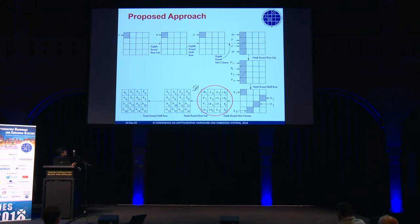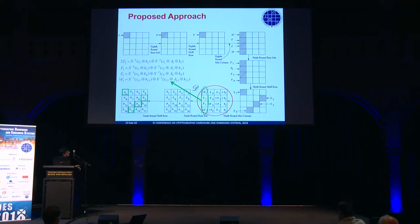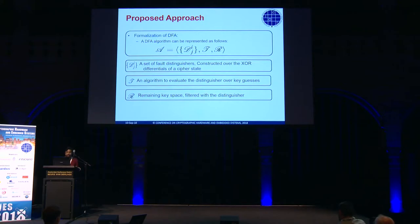This column is linearly correlated, and that gives you a nice set of equations — that is one of the distinguishers in our framework. Now let's formalize DFA. Not only the distinguisher, but there are a couple of other things as well. The first is an algorithm to evaluate the distinguisher over the key guesses. If you have a distinguisher — a filter — you have to test all possible keys over that filter. If you have a key space up to 2^120, it's not feasible, so you need a clever divide-and-conquer policy.